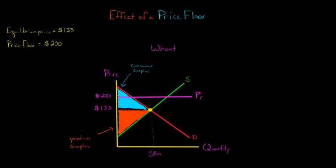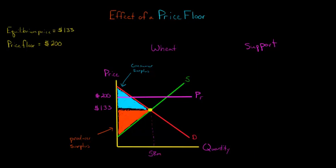Technically, the government could also say that if there's any surplus left over, we will buy it — that's actually called a price support, where the government not only sets the floor at $200 but also buys up any extra wheat. We'll make a different video about that later. Right now we're just saying the government sets the price of wheat at $200 and it cannot come below this floor.